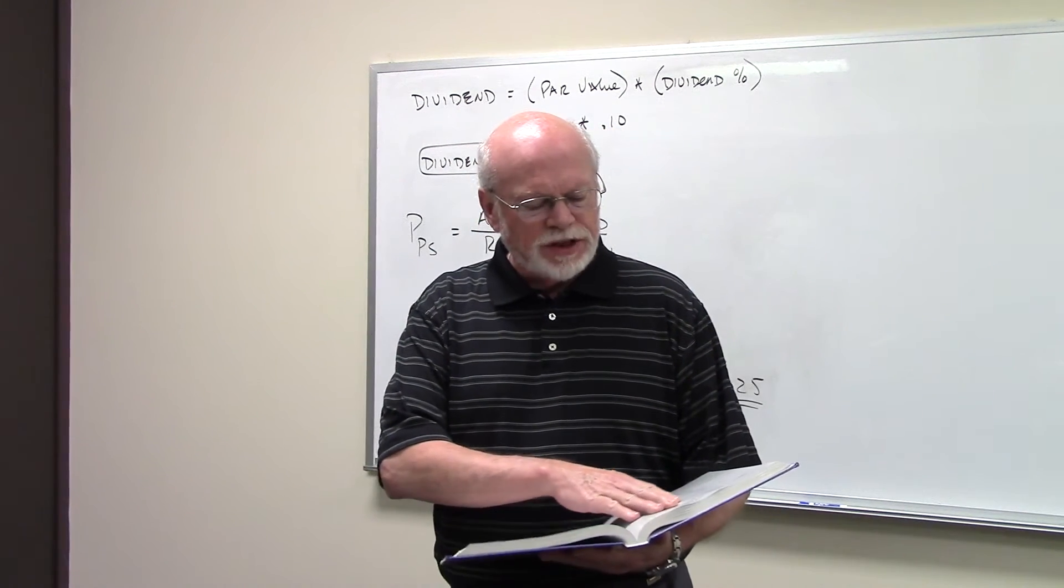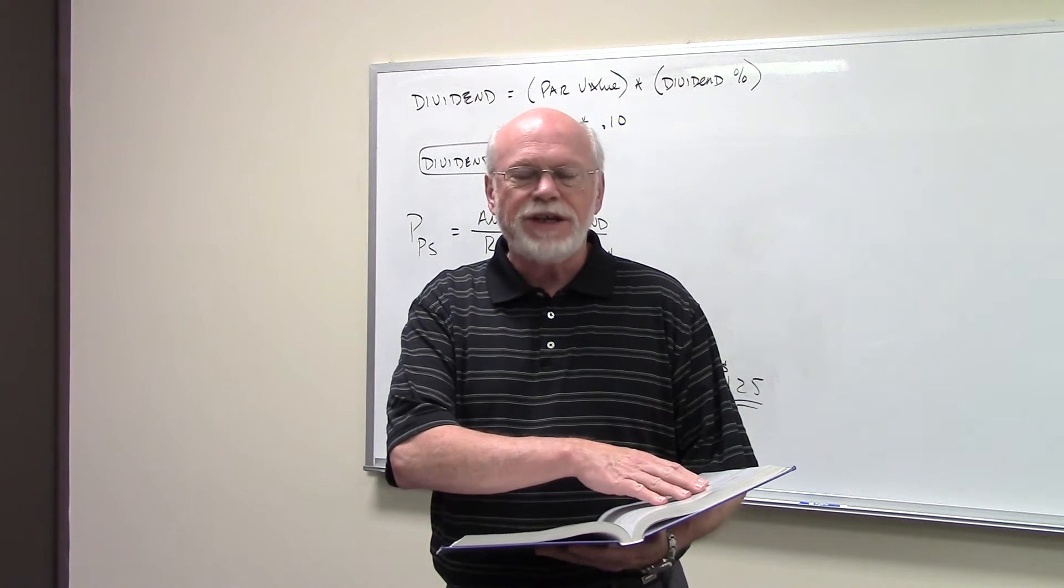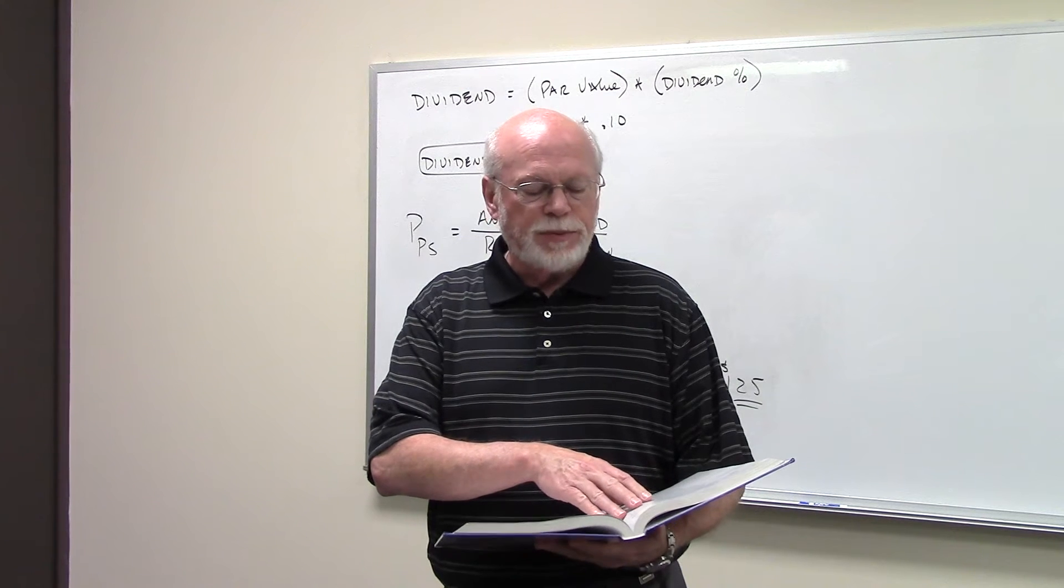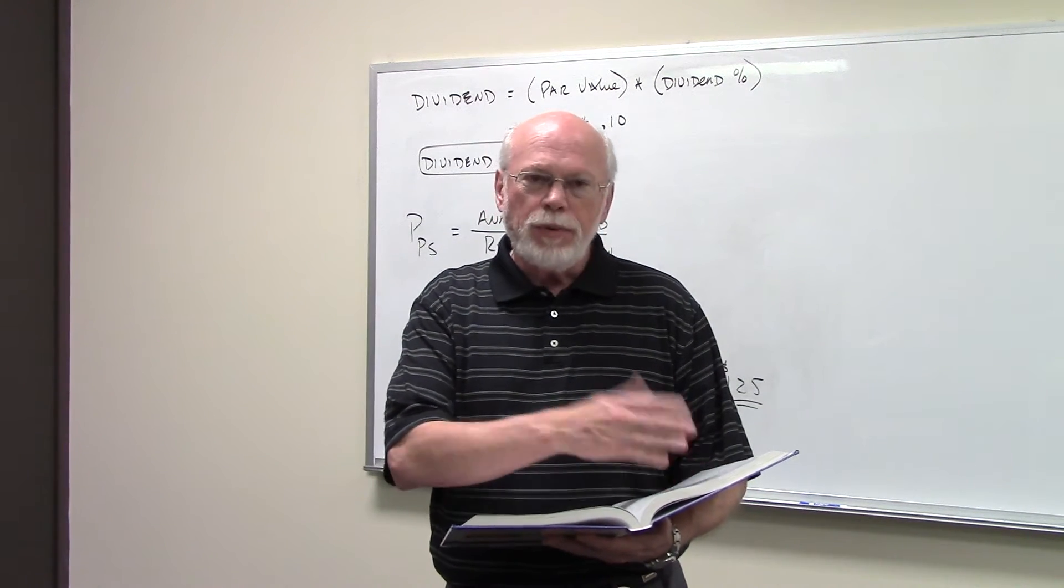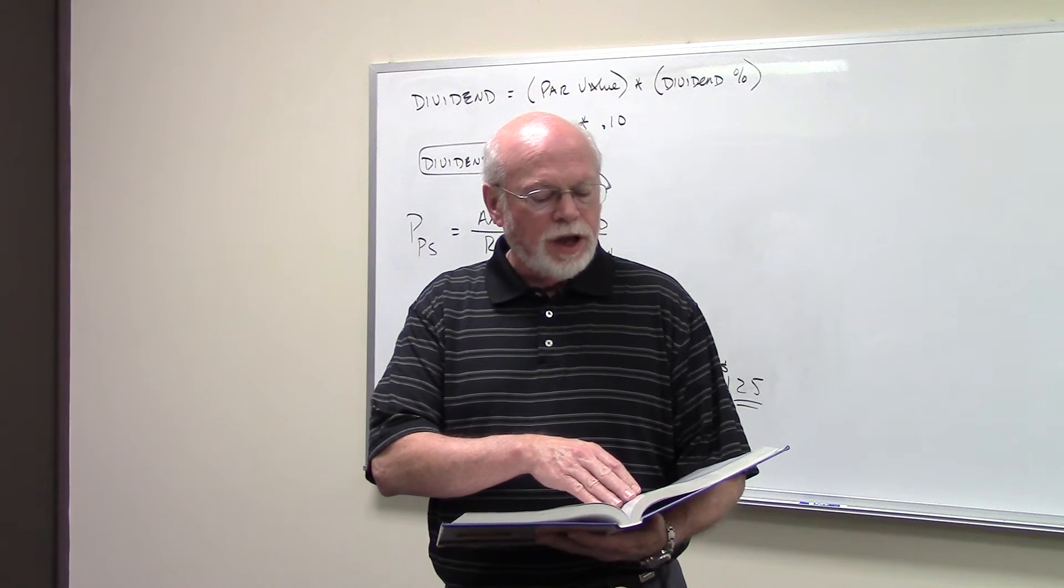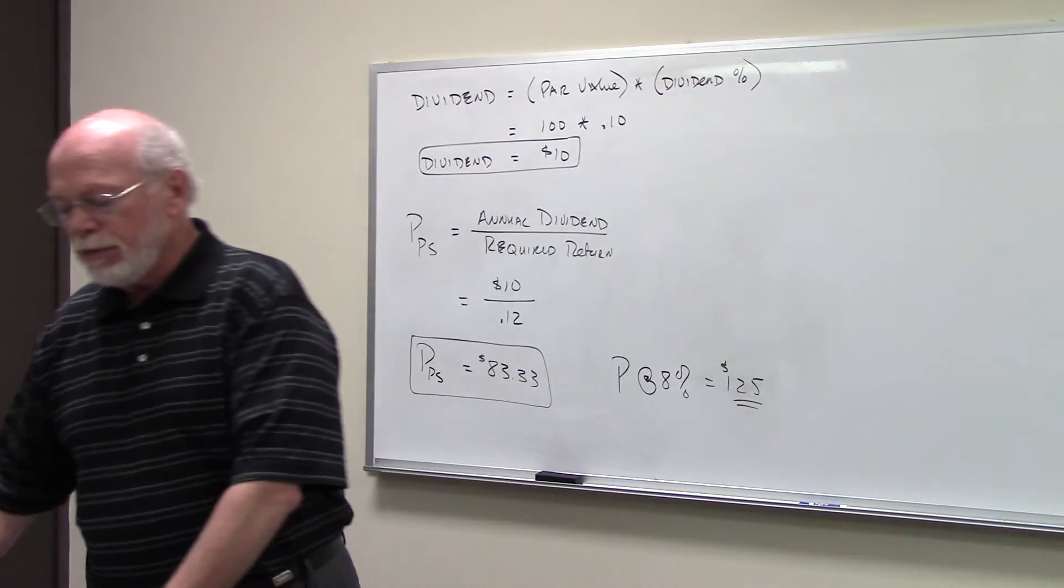The Ezell Corporation issued perpetual preferred stock with a 10% annual dividend. The stock currently yields 8% and its par value is $100. What is the stock's value? Part B: Suppose interest rates rise and pull the preferred stock's yield up to 12%. What is the new market value of the preferred stock?